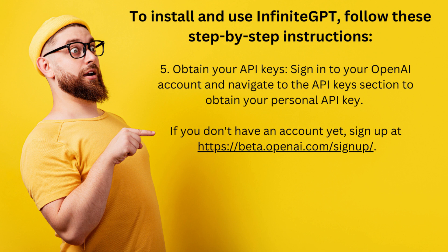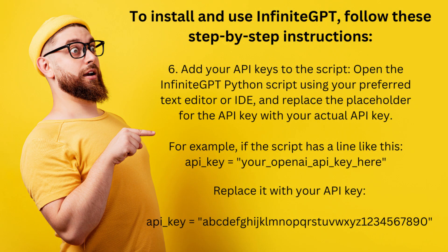Obtain your API keys by signing into your OpenAI account and navigating to the API keys section. If you don't have an account yet, sign up at beta.openai.com/signup. Then open the InfiniteGPT Python script using your preferred text editor or IDE, and replace the placeholder for the API key with your actual API key.